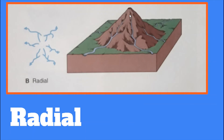This is a more realistic diagram of a radial drainage pattern, where you can actually see the peak, and you can see the areas where the water is running off the land.